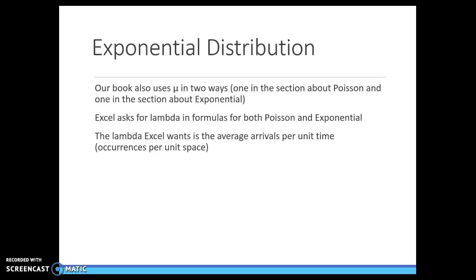So the lambda that Excel is asking for is the mean time. It wants the average arrival time per unit of time. It's kind of awkward to think about.